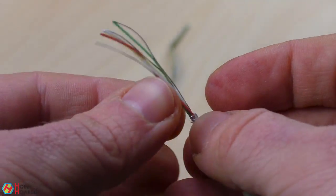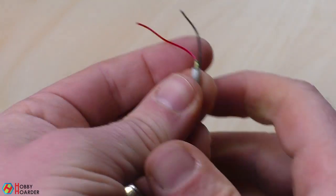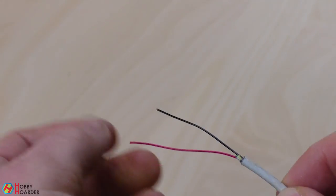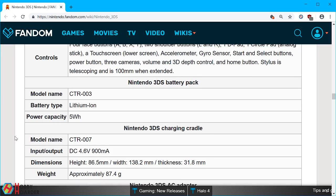You only need red and black wires, so you can cut away the others. Before we connect the wires, we have to talk about voltages as well. 3DS charges at 4.6V, while the standard voltage for USB is 5V.